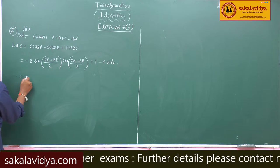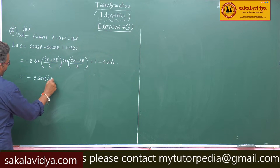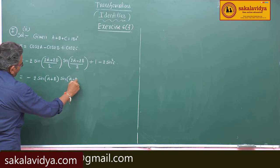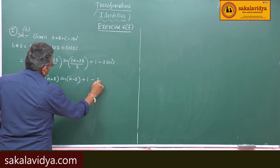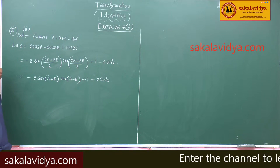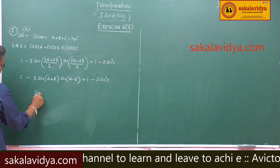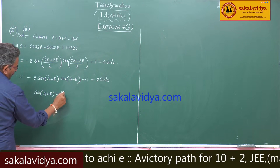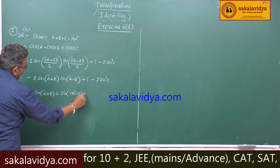This we can write as minus 2 sin(A+B) sin(A-B) plus 1 minus 2 sin squared C. Since A plus B plus C equals 180 degrees, sin(A+B) is equal to sin(180 degrees minus C), that is sin C.